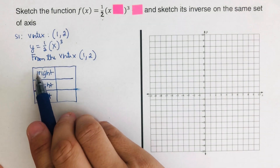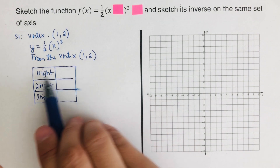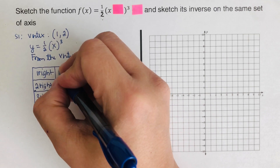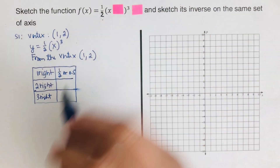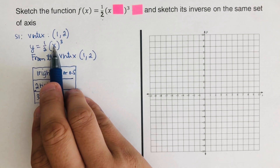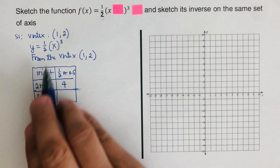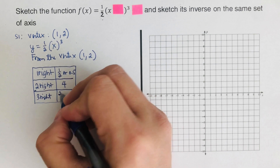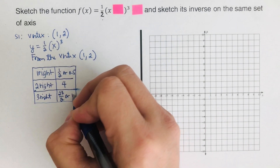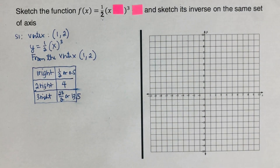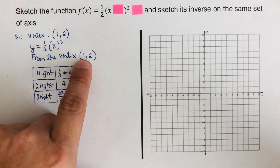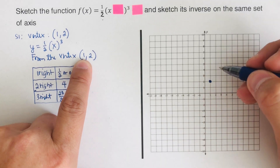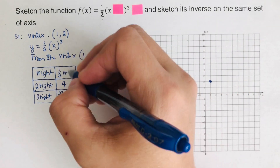From the vertex at (1, 2), we plug in values: 1³ = 1, times ½ = 0.5; then 2³ = 8, times ½ = 4; then 3³ = 27, times ½ = 13.5. Since these are all positive, we go up. We sketch the vertex first at (1, 2), then 1 right and 0.5 up.